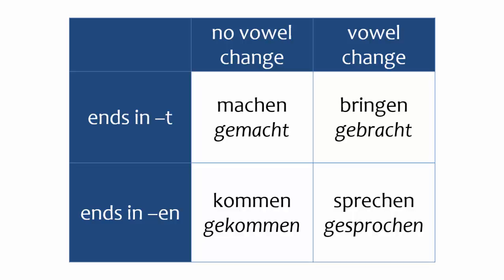Another category, an example of which is KOMMEN in the lower left, has a participle with the ending EN instead of the expected ending T. A final category, an example of which is SPRECHEN in the lower right, has a participle that shows both the ending EN and a spelling change.